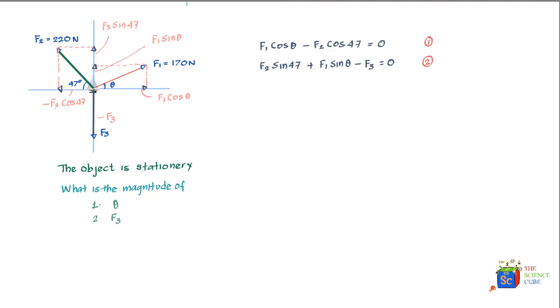Now let's substitute the values of F1, F2, and F3 that are known. F3 is not known and we'll find the value of F3 by solving these two equations. What we get is 170 cos theta minus 220 cos 47 should equal zero from equation one. If you solve for theta, what you get is cos theta is equal to 220 cos 47 divided by 170. If you take the inverse cos of this value, what you get is theta is equal to 28 degrees.